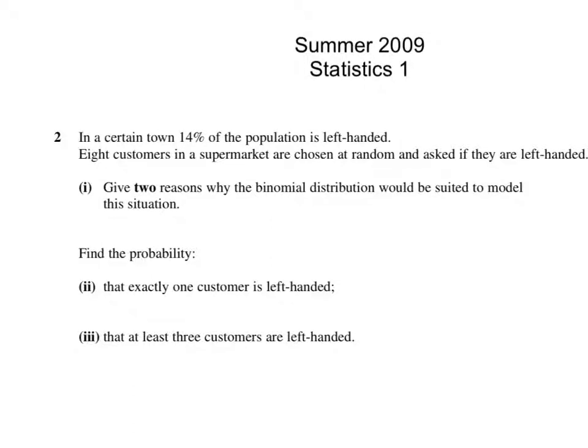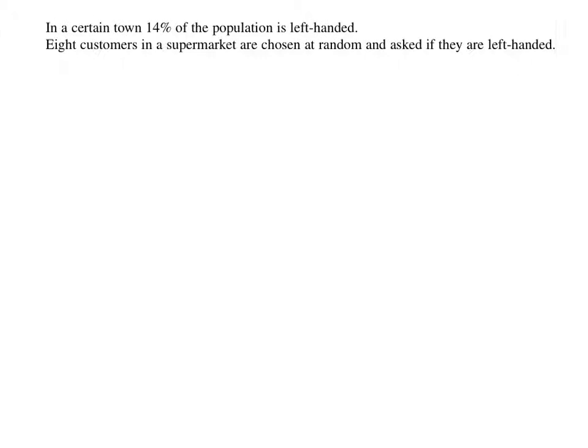S1 Summer 2009 Question 2 Binomial Distribution Part 1: state two reasons why this is a binomial. The first reason is we have a fixed number of trials, and in this case that is the 8 customers.